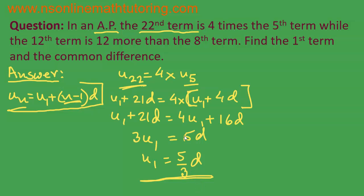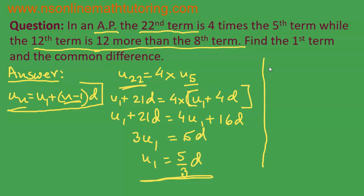Now we come to the second piece of information, that the 12th term is 12 more than the 8th term. So u12 is equal to 12 plus u8.